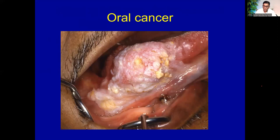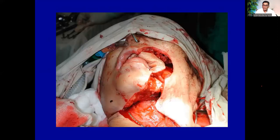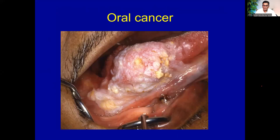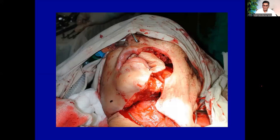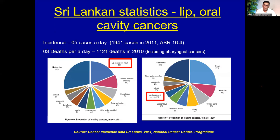Oral cancers are devastating because the treatment of oral cancer, being in the head and neck region, affects the patient significantly and reduces quality of life — after surgery for oral cancers, patients are disfigured. Regarding the burden of oral cancer: every day five new cases of oral cancers are diagnosed, and every day three people die due to oral cancers. Oral cancers are prominent among males — it is the number one cancer among males in Sri Lanka.